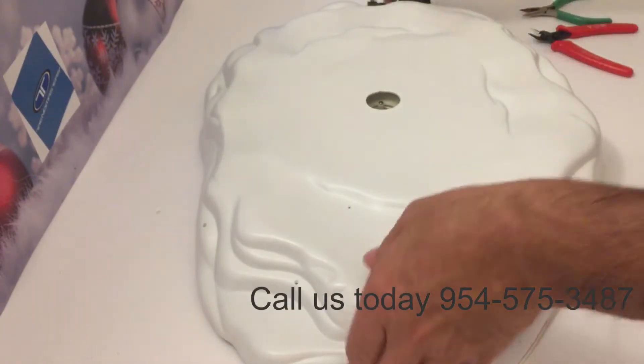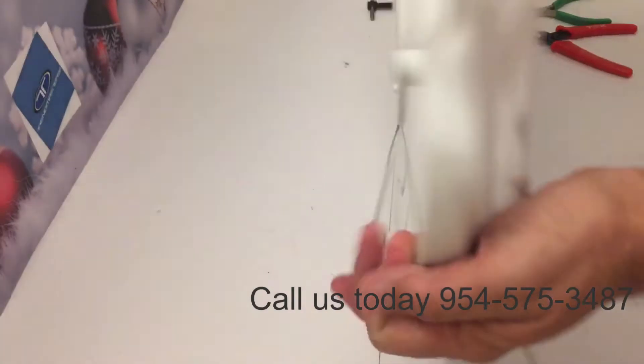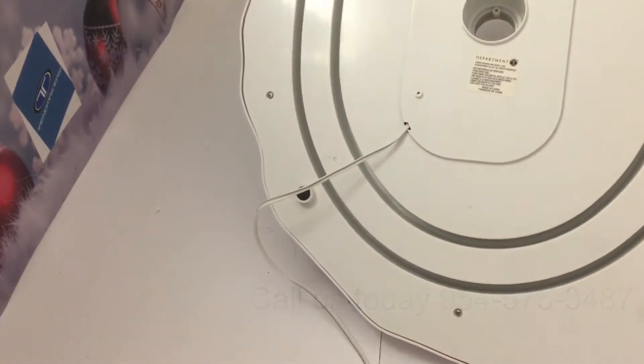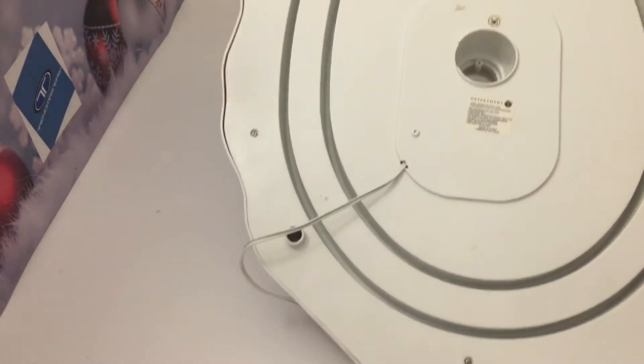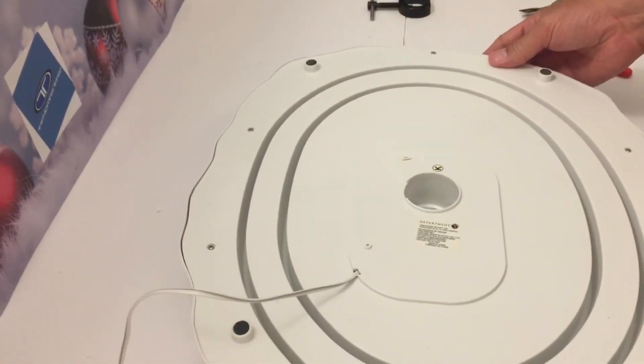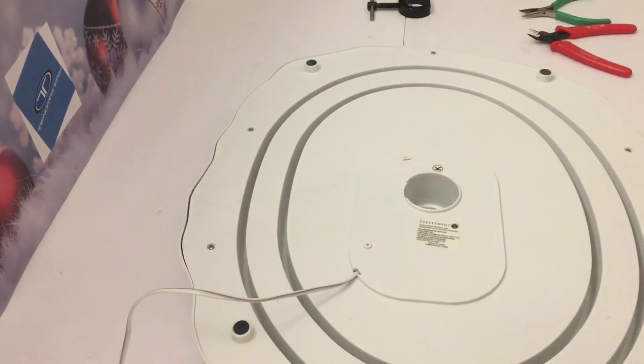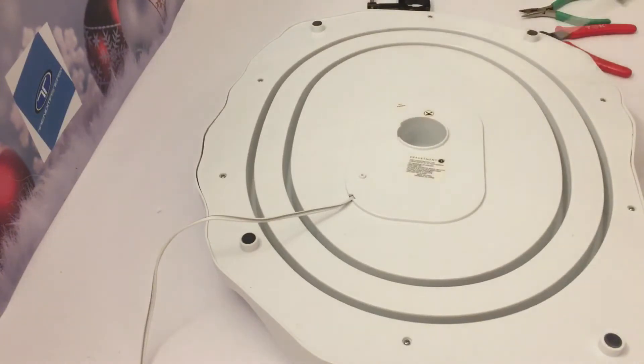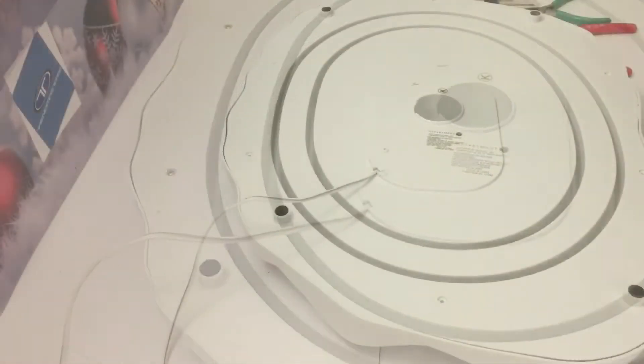As you can see, this is a 4.5 volt system, DC. Now, the first thing we are going to do today is to remove the bottom cover. The screws are on the bottom. With a Phillips screwdriver, one, two, three, four, five, six screws on the bottom.